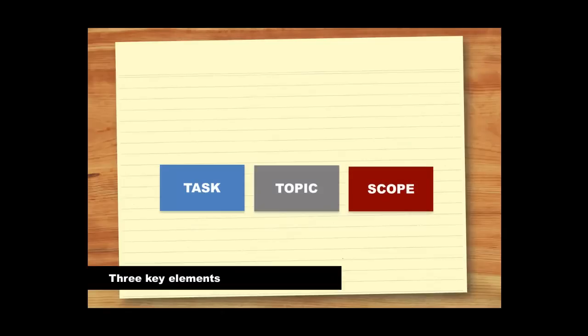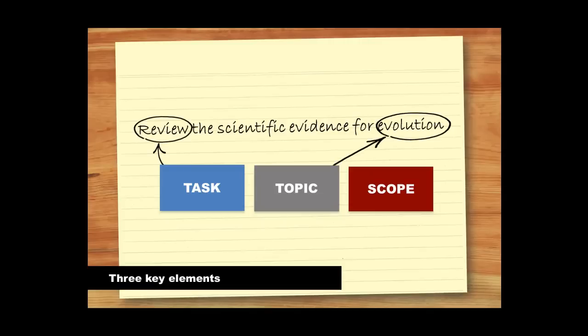For example, say the assignment asks you to review the scientific evidence for evolution. The word 'review' is the task, evolution is the topic of the assignment, and most importantly, the scientific evidence part limits the scope of the assignment.